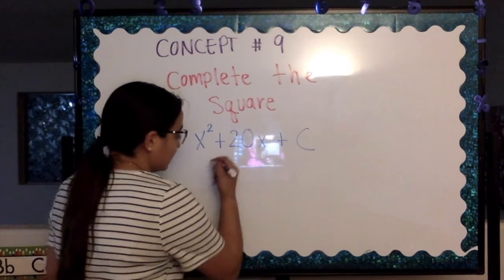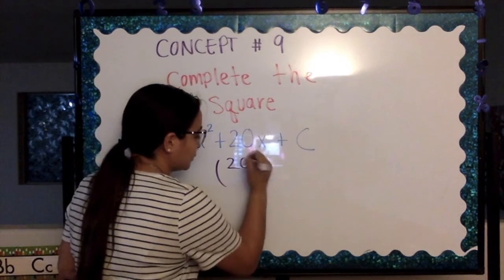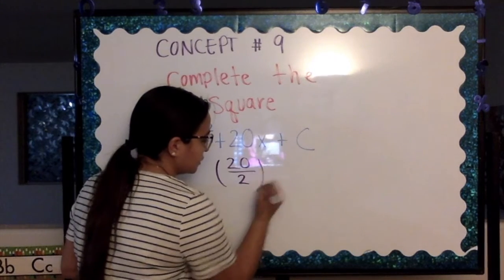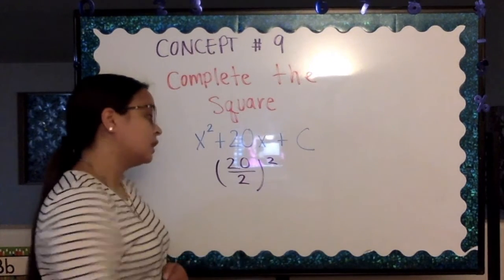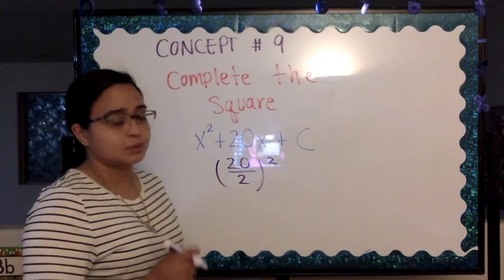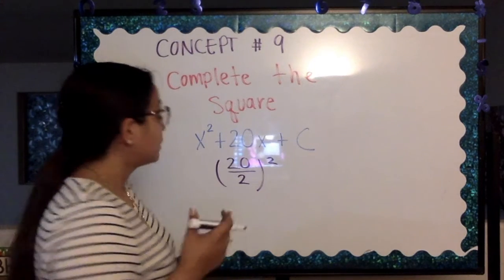So I'm going to plug it in to what I had mentioned before: 20 divided by 2 squared. 20 goes into—I'm sorry, 2 goes into 20 ten times.